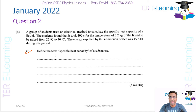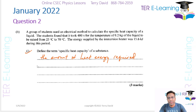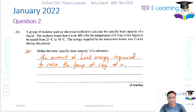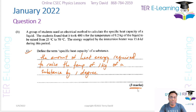First part: define the term specific heat capacity. Specific heat capacity is the amount of heat energy required to raise the temperature of one kilogram of a substance by one degree — that one degree can be one degree Kelvin or degree Celsius. That definition is worth three marks.